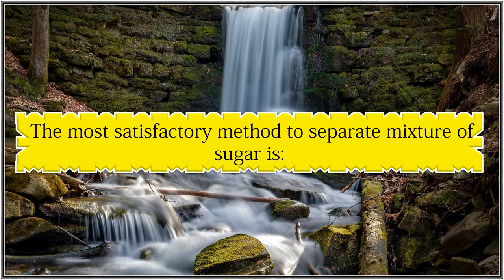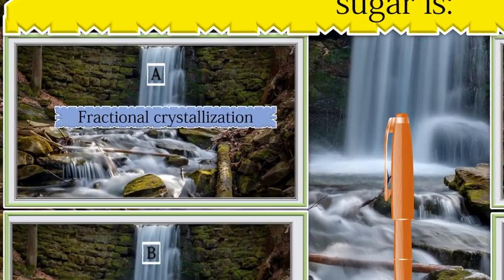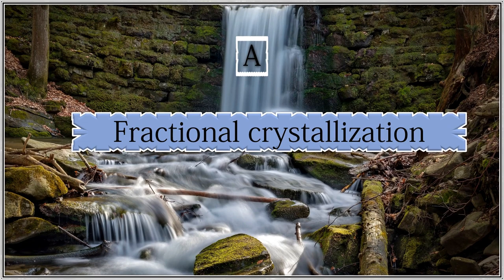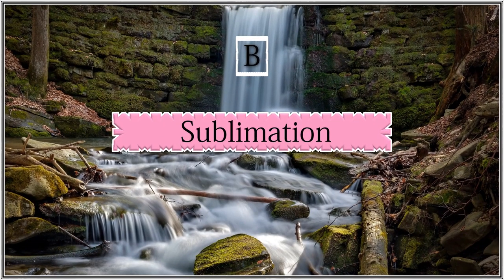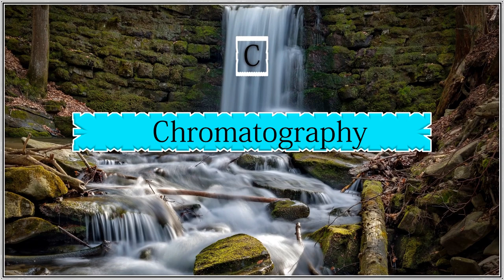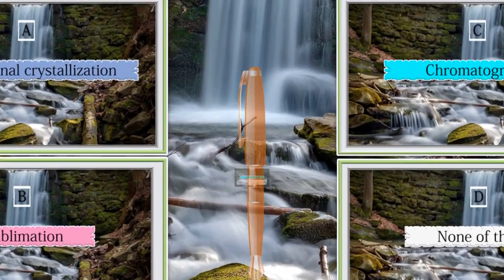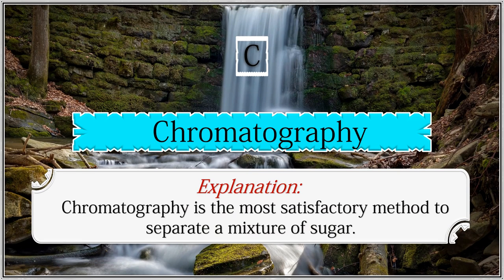The most satisfactory method of separating a mixture of sugars is: (A) fractional crystallization, (B) sublimation, (C) chromatography, (D) none of these. The answer is chromatography. Chromatography is the most satisfactory method to separate a mixture of sugars.